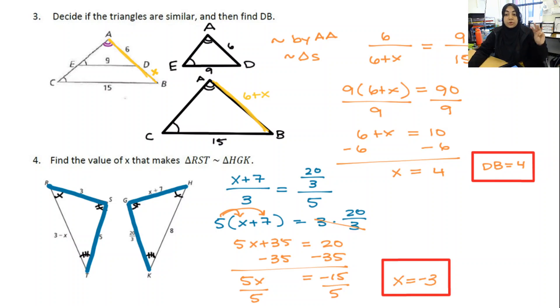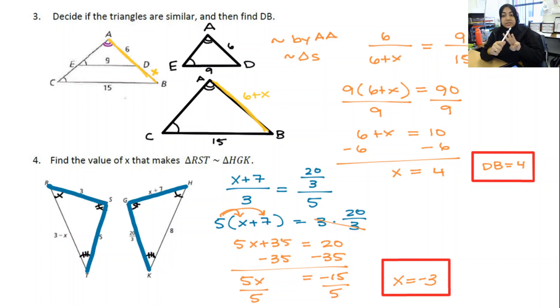And so now you know those three similarity theorems you can use: angle-angle, side-side-side, and side-angle-side, to prove that triangles are similar. Thank you very much.